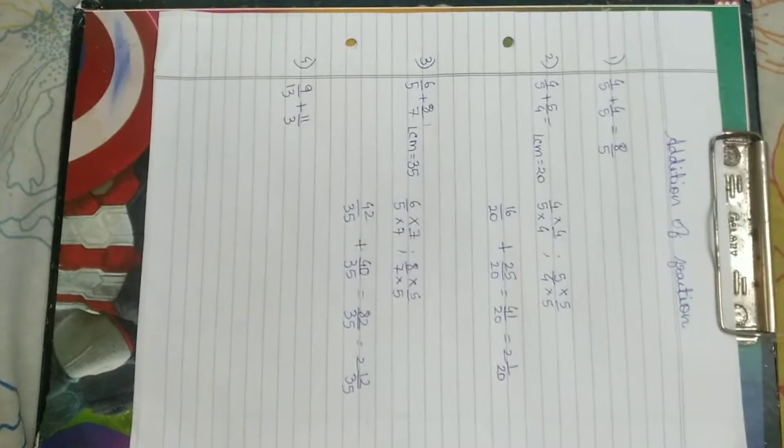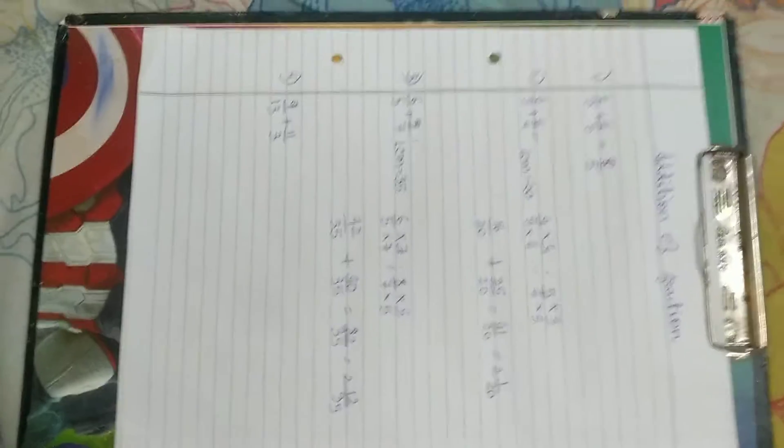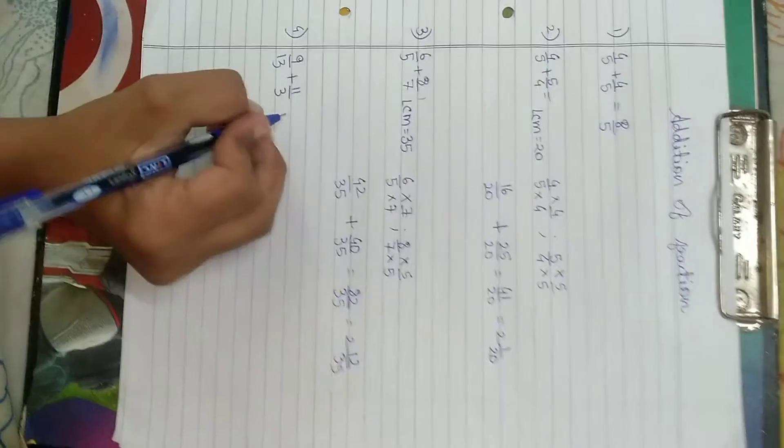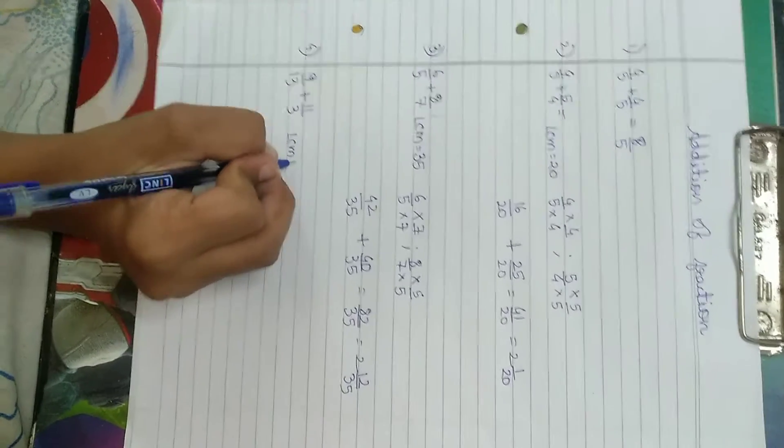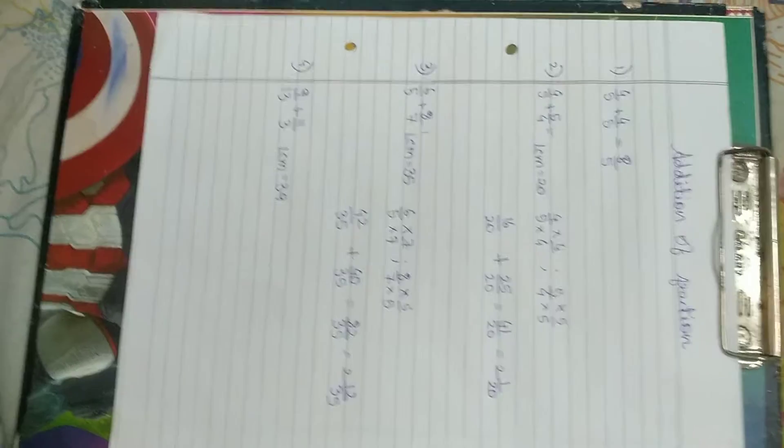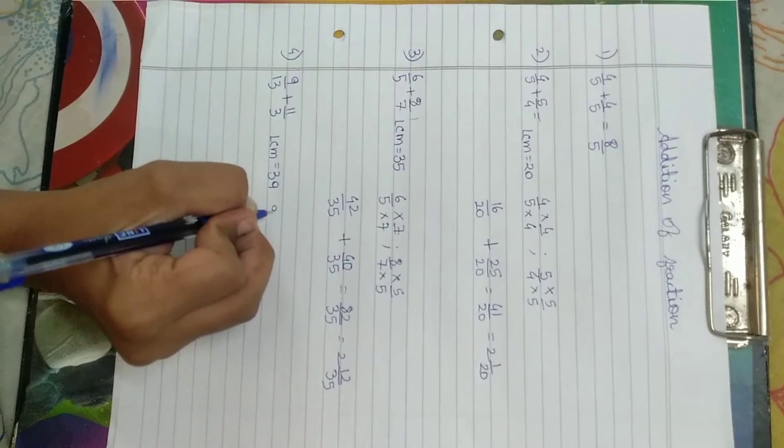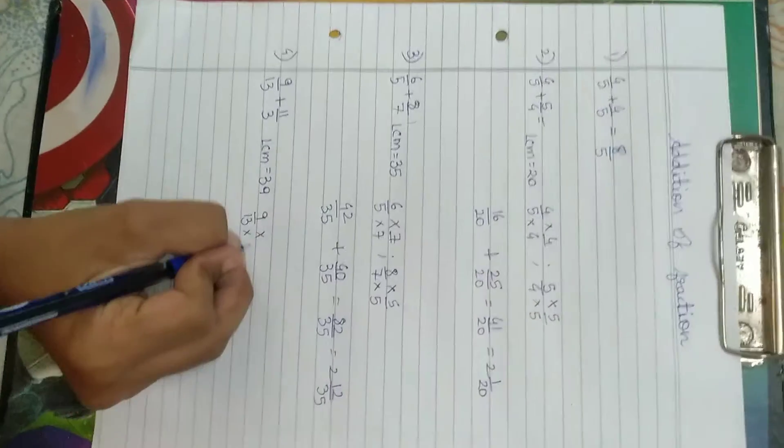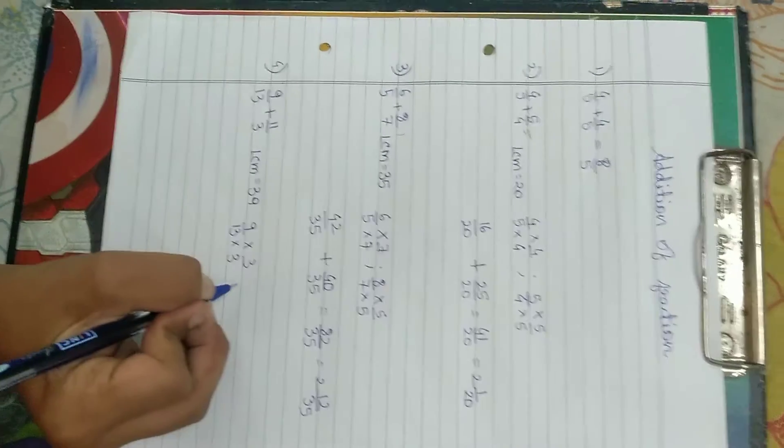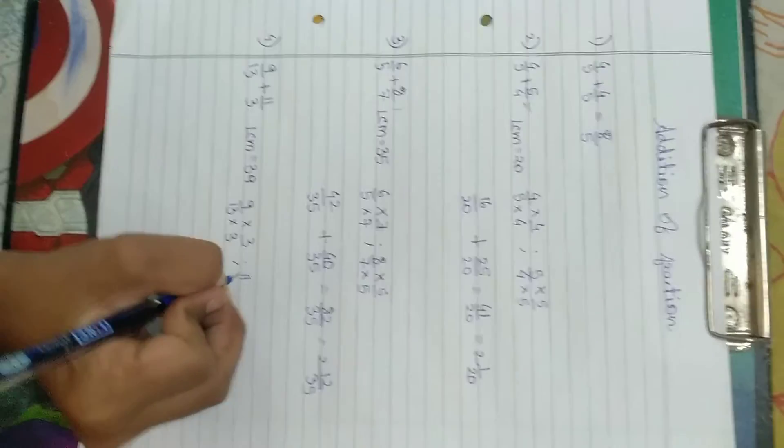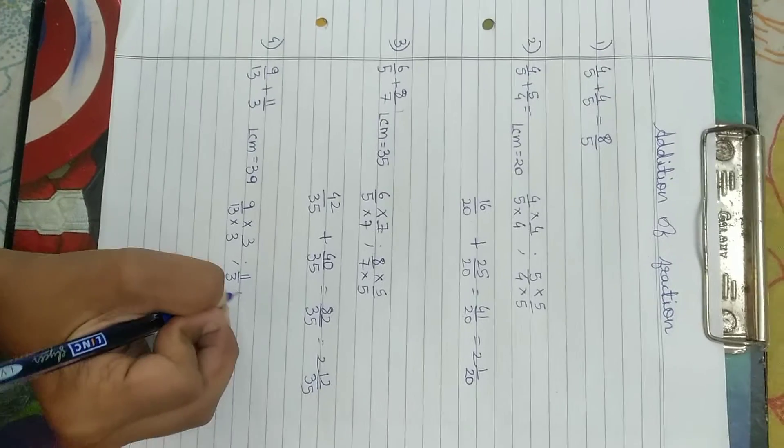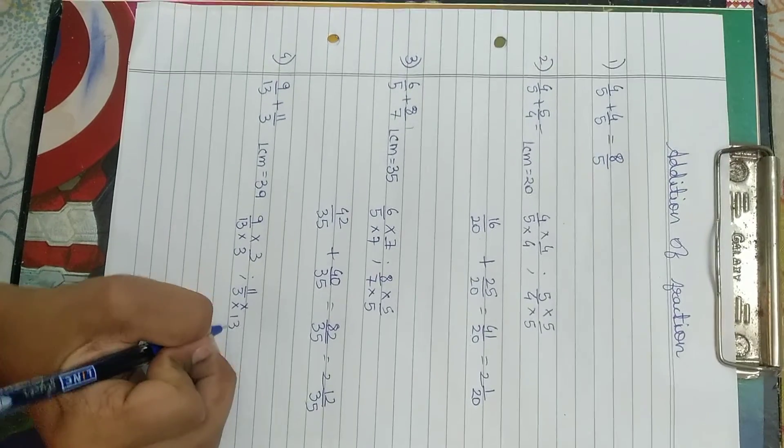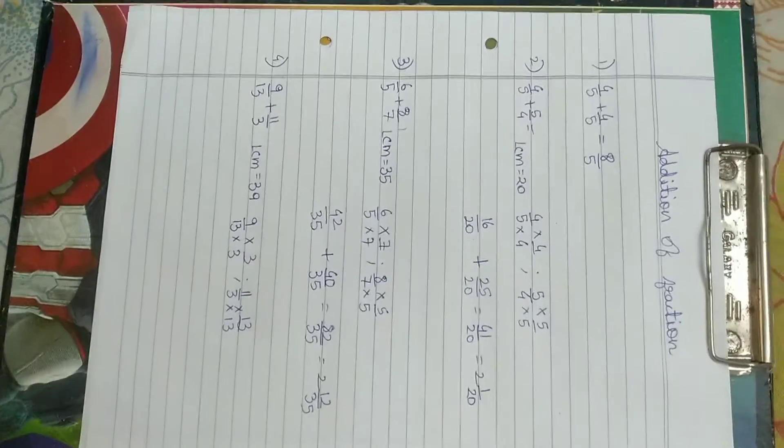Now the denominators are also not same. So we will convert them to the same denominator. The LCM of 13 and 3 is 39. Now we will multiply 9 by 13. 13 times what equals 39? We will multiply it by 3 by 3. Now 11 by 3, 3 times what equals 39? We will multiply it by 13.